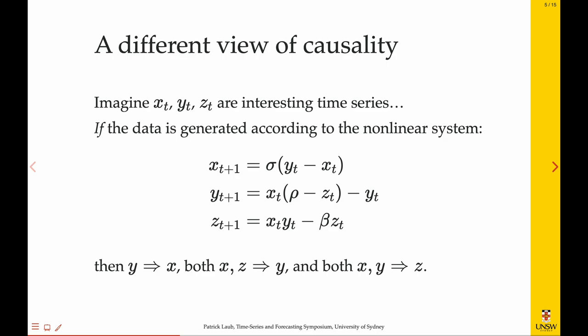Our view of causality in this world is to imagine that our data generating process is a nonlinear dynamical system. Here I've just got X, Y, and Z for the time series, but pretend that's something of interest to your field. Maybe it's GDP and unemployment, or maybe it's the number of fishes and sharks in your ecosystem. Imagine that we're God and we could see the data generating process, and it's this set of equations. The exact equations don't really matter, but if we could see these equations, we'd agree that Y is a direct cause of X, and X and Z are direct causes of Y, because at the next time step we can see it rely on those values at the current time. That's the kind of causality we're talking about here.